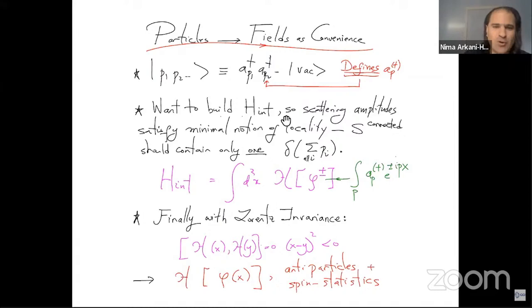And in order to do that, you have to build the interaction Hamiltonian as an integral over something local over space of some Hamiltonian density. And in order for these things to transform nicely under the symmetries, translations, and so on,